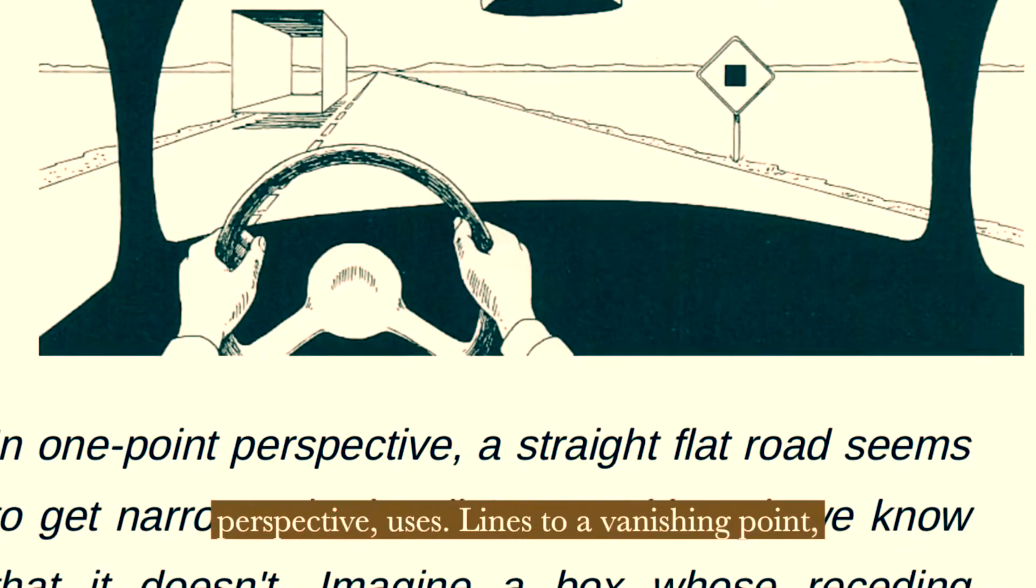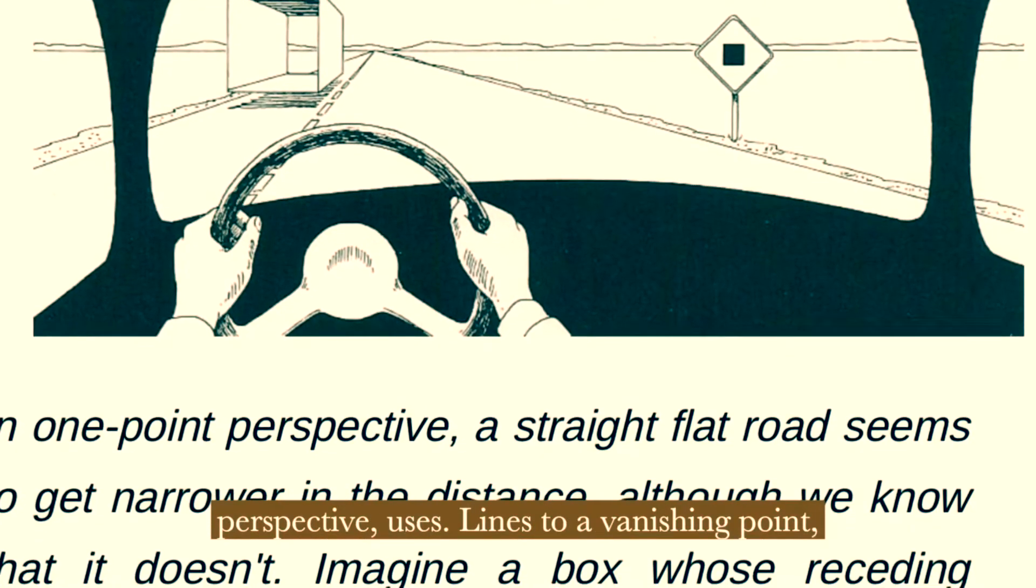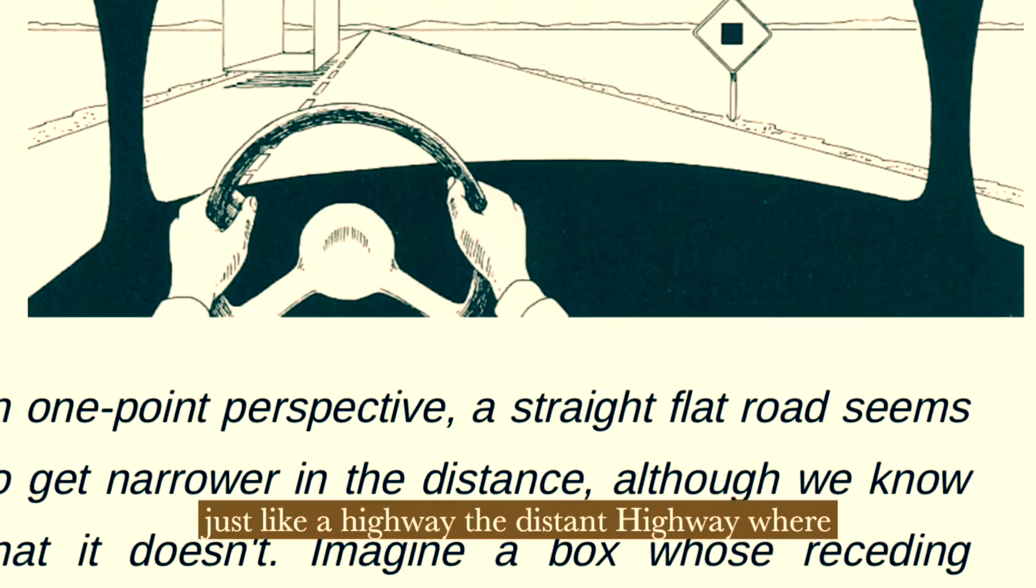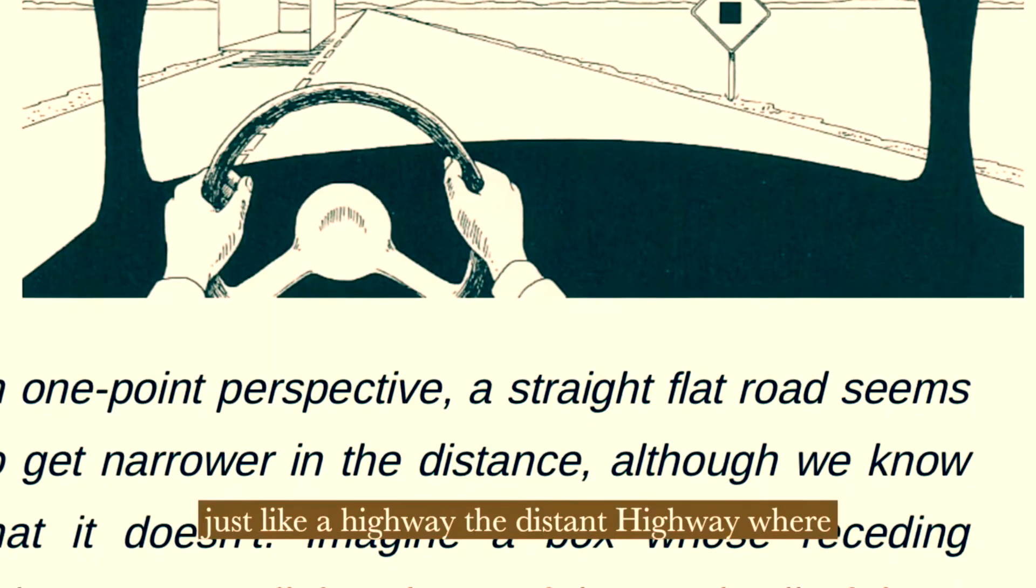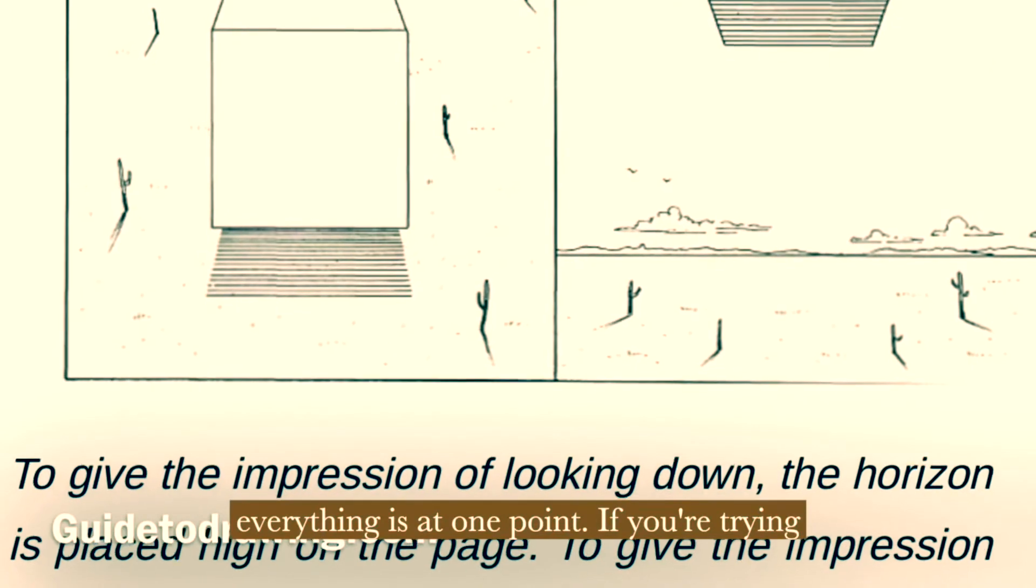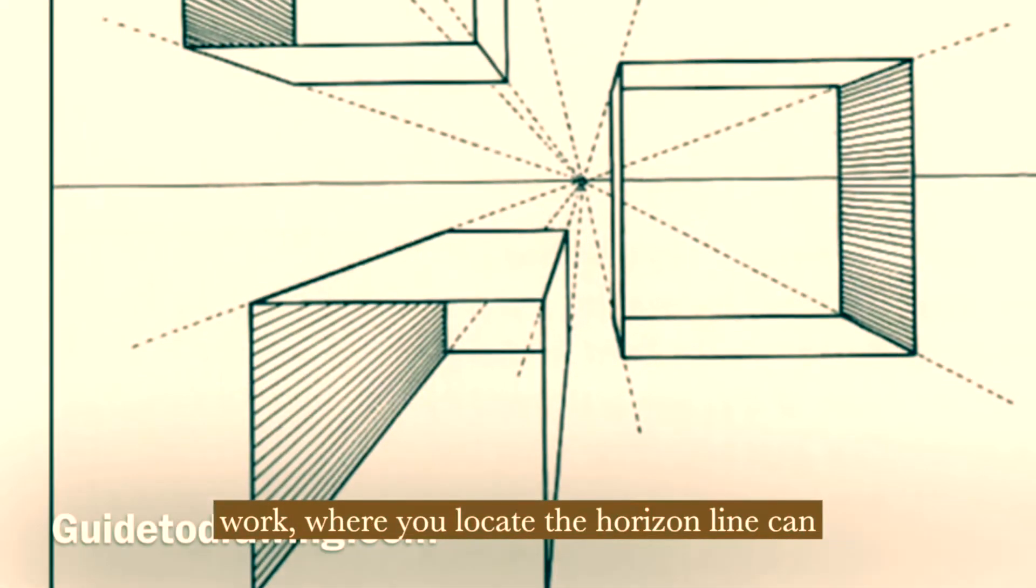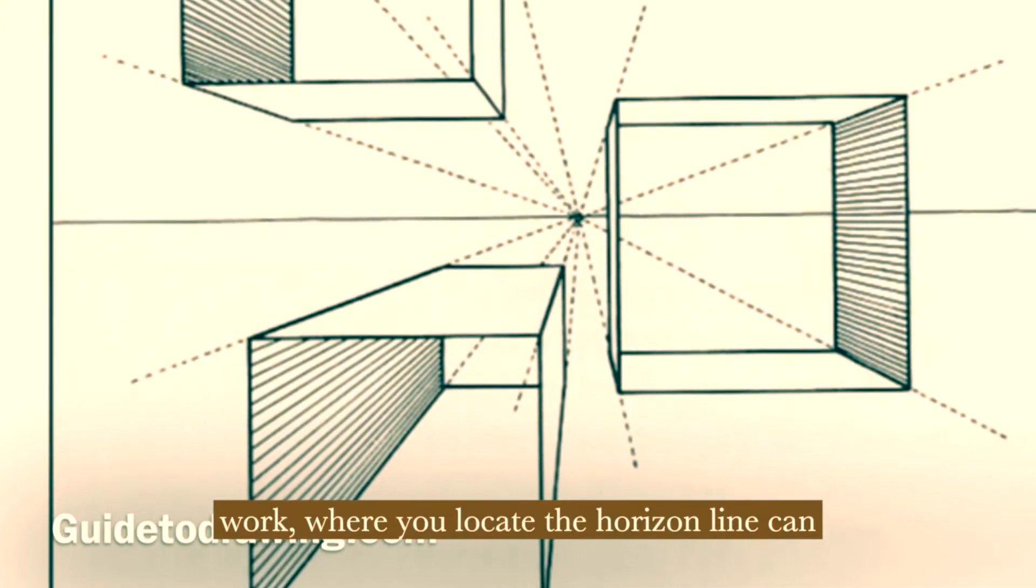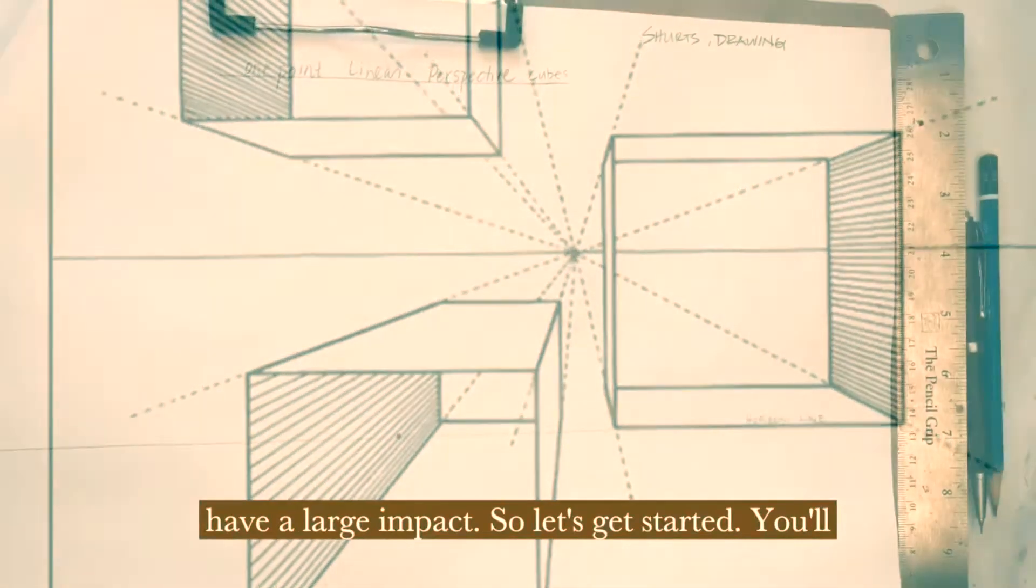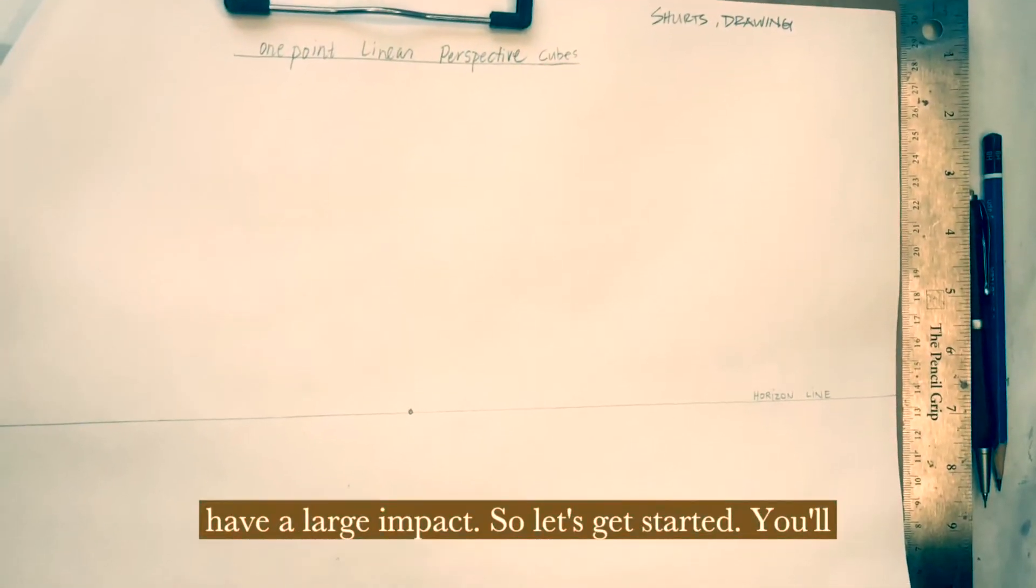Linear perspective uses lines to a vanishing point, just like a highway, a distant highway where everything is at one point. If you're trying to use perspective to your advantage in your work, where you locate the horizon line can have a large impact. So let's get started.